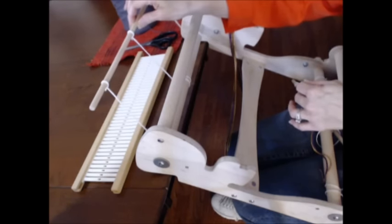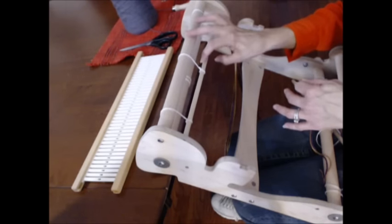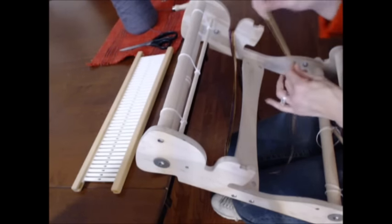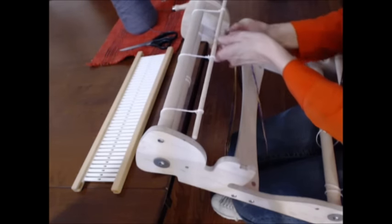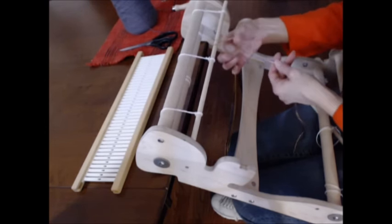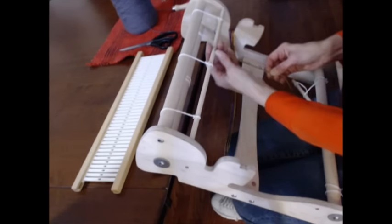Notice my apron rod, as it always should be, is up and over the back tension beam. Starting for me on the right, because I'm right-handed, I'm going to put the loop over the top of the apron rod and pull the two loose strands through the loop.